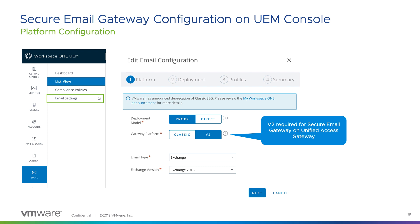Let's look at how to configure Secure Email Gateway on the UEM console and Unified Access Gateway. Starting with the UEM console: the first step is to go into the Mobile Email Management configuration and add a new email configuration. You can have multiple email configurations, each associated with one Unified Access Gateway appliance. Select the proxy deployment model for Secure Email Gateway, and the platform must be V2 — the one supported by Unified Access Gateway. Define the email type and the Exchange version you'll be using.